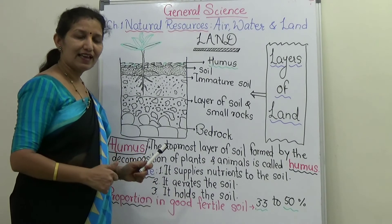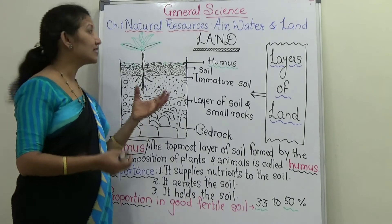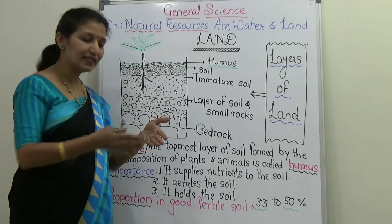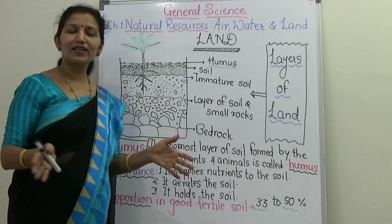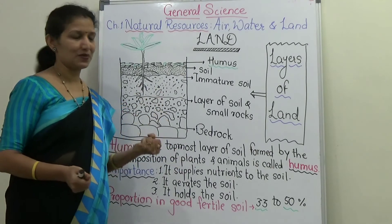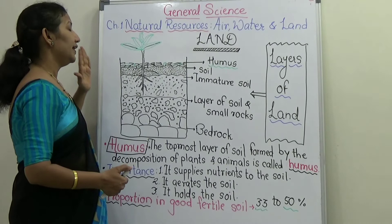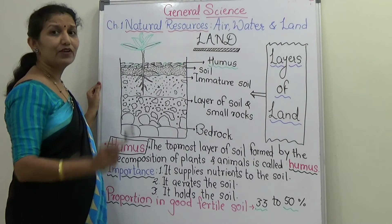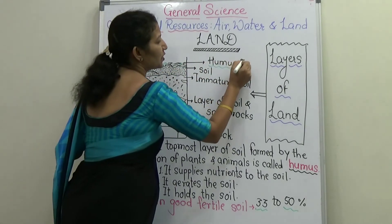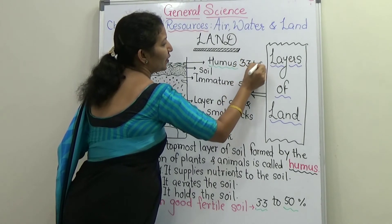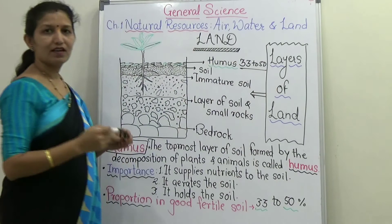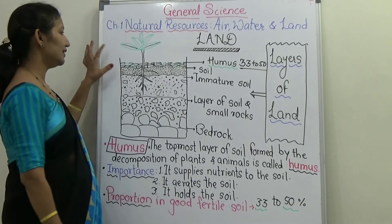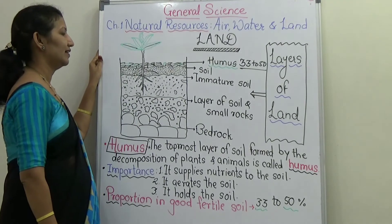Humus also aerates the soil and helps hold it together, as plant roots grow into the soil and bind it. In mature, good, fertile soil, the proportion of humus is 33 to 50 percent — up to 50 percent of that soil contains humus. In this way, humus is a very important layer.